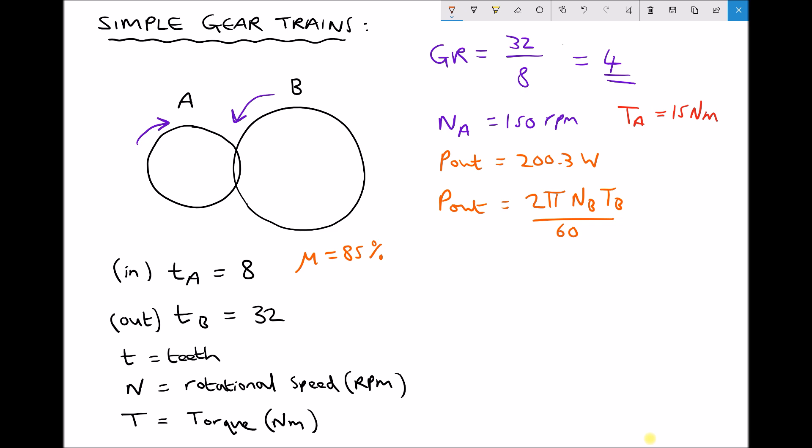And whilst it looks complicated, we can just follow the steps of rearranging an equation. The first thing we need to do to each side is times by 60. So we get 60 times P out equals 2π n subscript b t subscript b. And the last step.